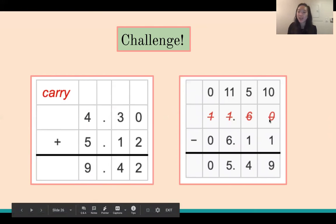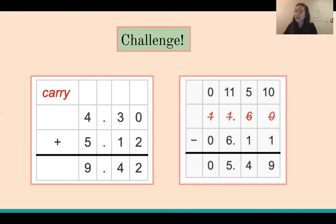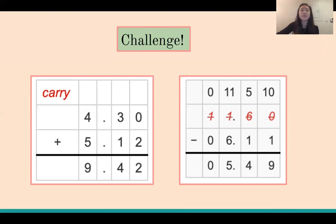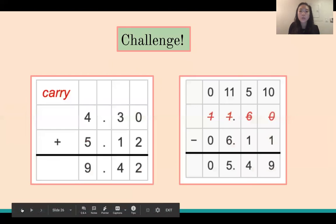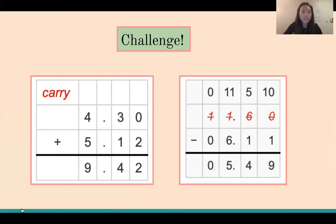Now we add 4.3 plus 5.12. I set this up by hand and notice there's an empty space, so I fill it with a zero to get 4.30. Then 0 plus 2 gives 2, and 3 plus 1 gives 4 — don't forget to bring down the decimal, giving 0.42. Then 4 plus 5 gives 9. So the answer is 9.42.